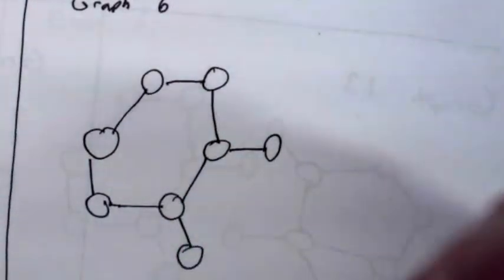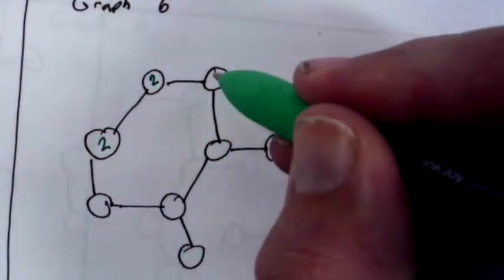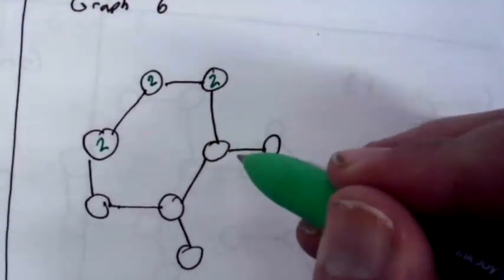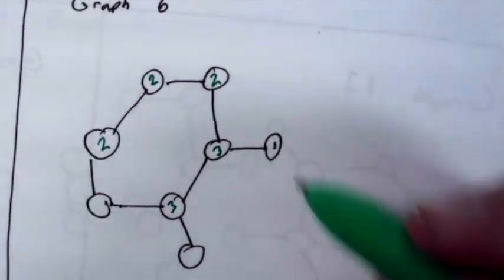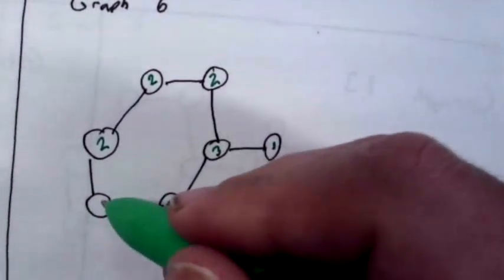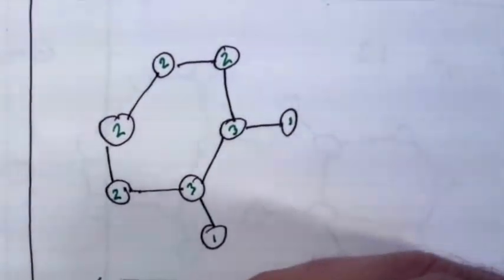Whereas on this other graph, the degree sequence would be degree of 2, degree of 2, degree of 2, degree of 3, degree of 3, degree of 1, degree of 1, degree of 2. So my degree sequence here would be 1, 1, 2, 2, 2, 2, 3, 3.